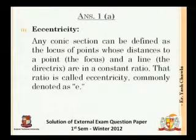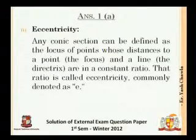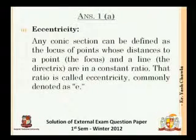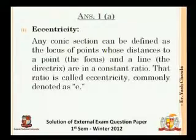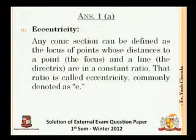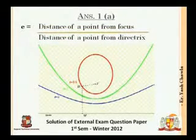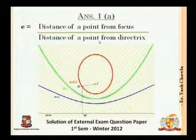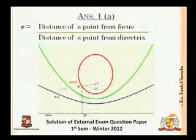Let's start with the definition of eccentricity. We had studied conics — construction of ellipse, parabola, and hyperbola — and came across this term. The definition is: any conic section can be defined as a locus of points whose distance to a point (the focus) and a line (the directrix) are in a constant ratio. That ratio is called eccentricity, commonly denoted as e. The ratio is: e equals distance of a point from the focus divided by distance of that point from the directrix.